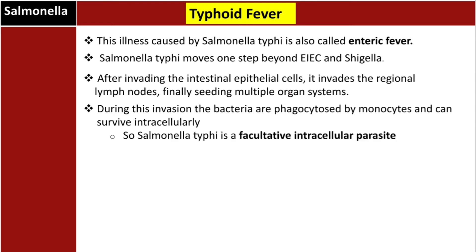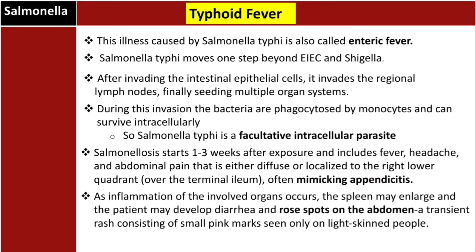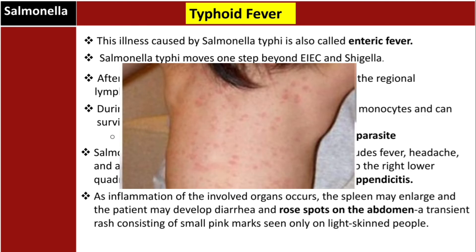Salmonellosis starts one to three weeks after exposure and includes fever, headache, and abdominal pain that is either diffuse or localized to the right lower quadrant over the terminal ileum — thus mimicking appendicitis. The spleen may enlarge, and patients may develop diarrhea and rose spots on the abdomen — a transient rash of small pink marks seen only on light-skinned individuals.